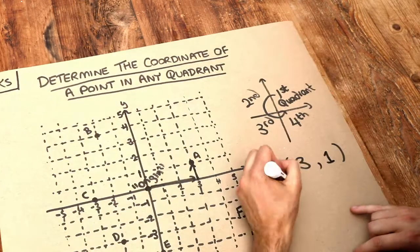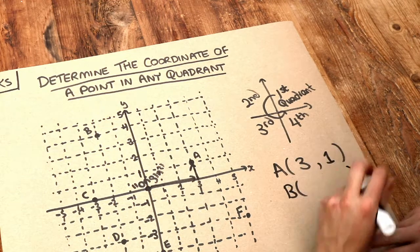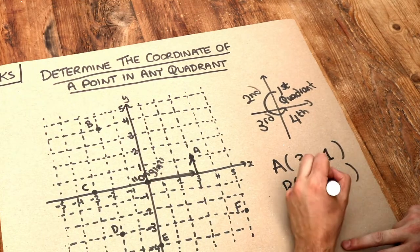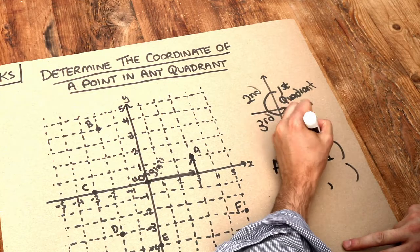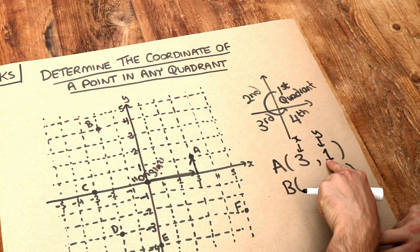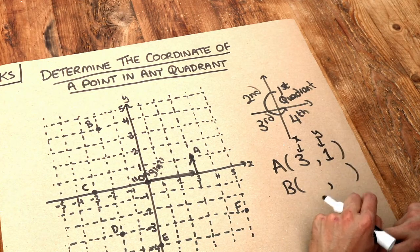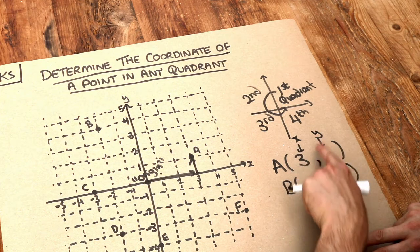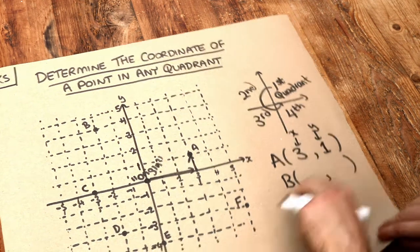What about point B? How far along do we have to go along the x-axis? Remember this first value is the x-value, the second value is the y-value, and alphabetically x comes before y, so the x-value should come before the y-value.